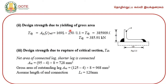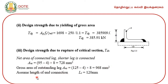The design strength of the selected section ISA 125 by 95 by 8 mm due to yielding of gross area, substituting the relevant values — the area, yield stress, and partial safety factor for material under yield — is found to be 385.91 kilo Newton. Step 3: design strength due to rupture of critical section TDN. The net area of the connected leg and the net area of the short leg are used. When the short leg is connected, the net area of the connected leg is found to be 728 millimeter square.